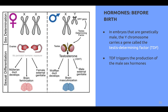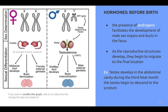The testes-determining factor differentiates the gonads into testes early in development. Later, the testes begin to secrete testosterone and DHT — dihydrotestosterone — which help differentiate the body and brain into a more male phenotype. The presence of androgens facilitates the development of male sex organs and ducts in the fetus. As reproductive structures develop, they begin to migrate to their final location; for example, testes develop in the abdominal cavity and during the third fetal month begin to descend to the scrotum.